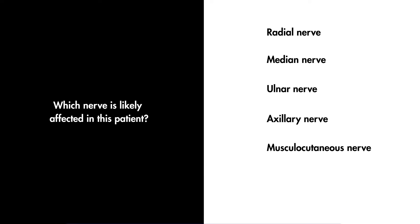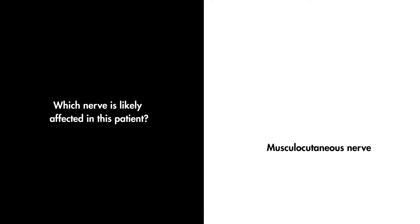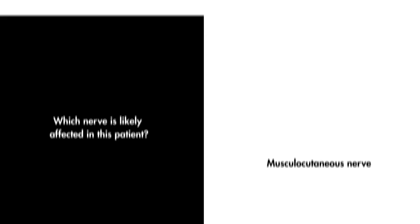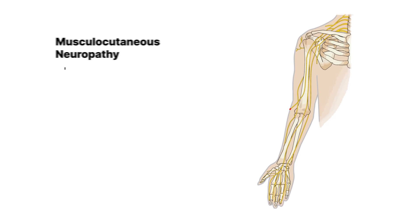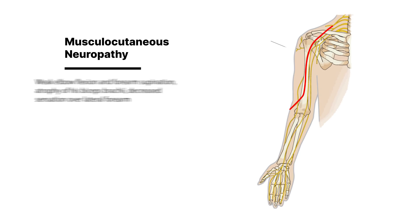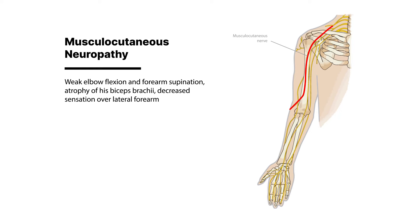Your professional baseball player's symptoms point to one culprit: the musculocutaneous nerve. If you piece together his weakened elbow flexion and forearm supination, the noticeable atrophy of his biceps brachii, and the decreased sensation over his lateral forearm, it all suggests an involvement of this nerve.